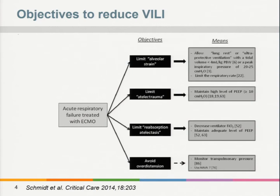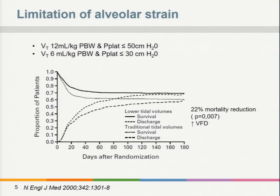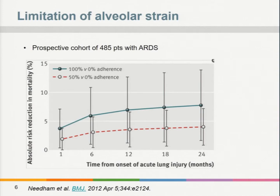The cornerstone of mechanical ventilation is low tidal volume, which came from a study published by the ARDS Network. Patients were ventilated with tidal volumes of 12 mL/kg and plateau pressures up to 50 cmH₂O, compared to 6 mL/kg tidal volume and lower plateau pressures of 30 cmH₂O. Ventilation with low tidal volume resulted in a 22% mortality reduction and more ventilator-free days. In a prospective cohort of nearly 500 ARDS patients, two-year survival was 50% greater with 100% adherence to lung-protective ventilation versus no adherence.